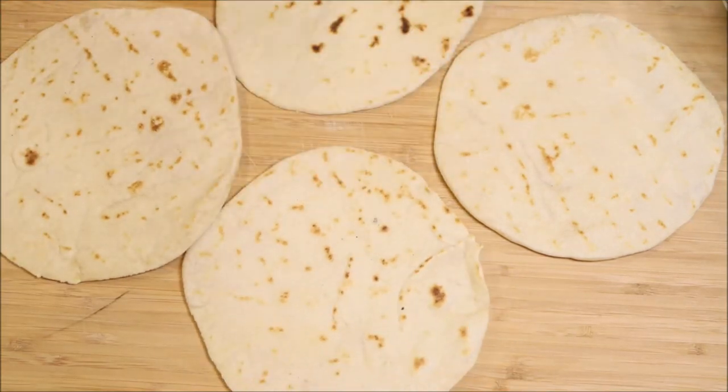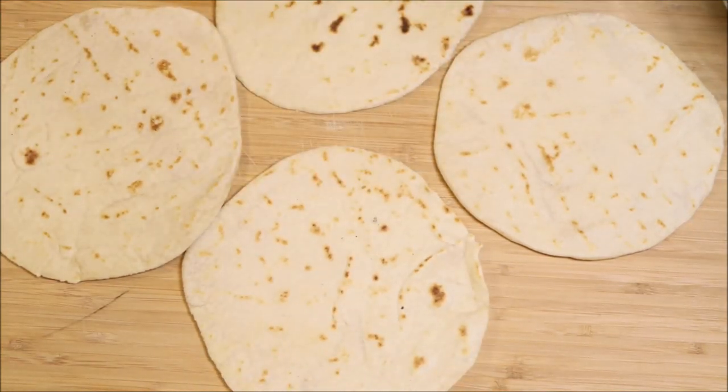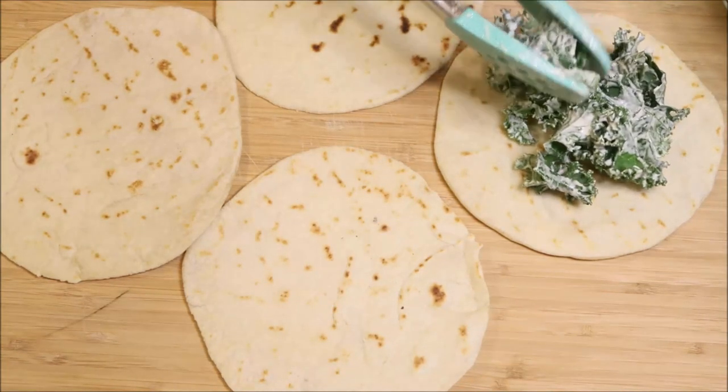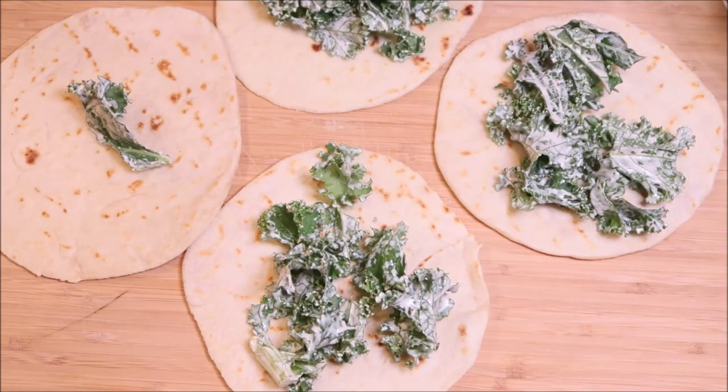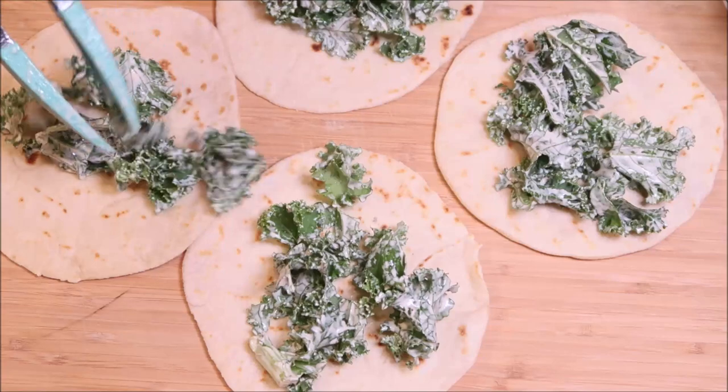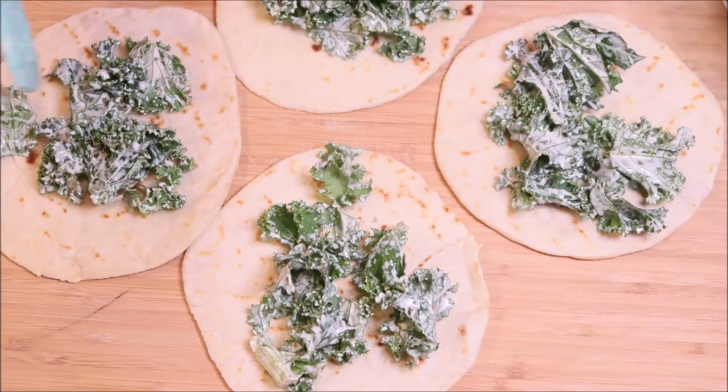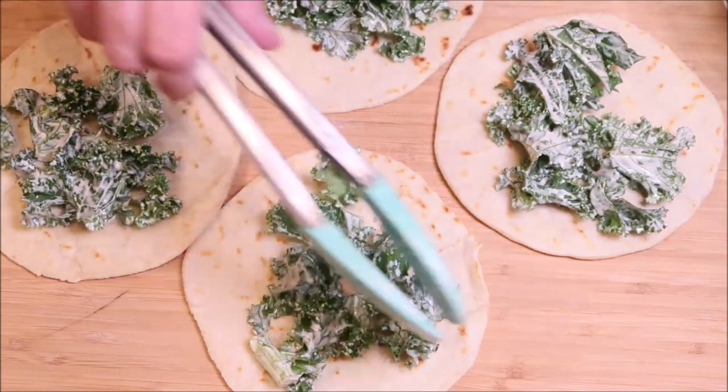We're going to gather all the components to make our soft tacos. First we're going to add in the kale. If your family doesn't like kale, you can always use lettuce. Kale has a certain texture and taste that not everybody likes.